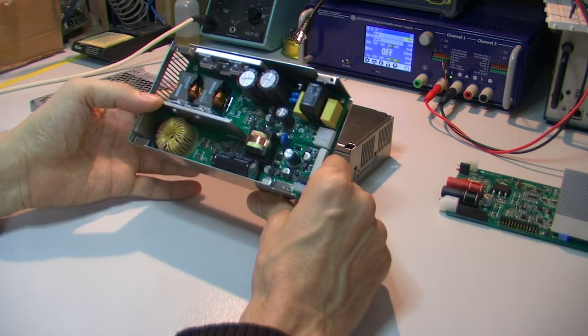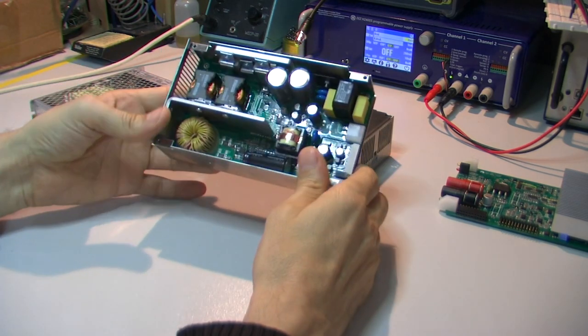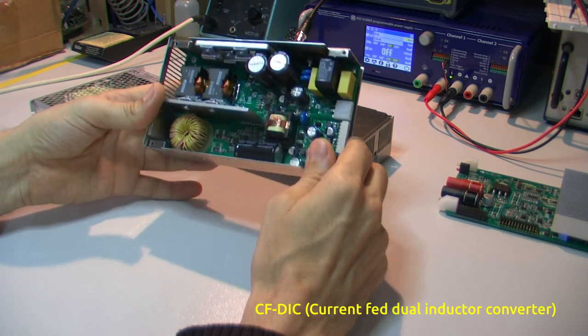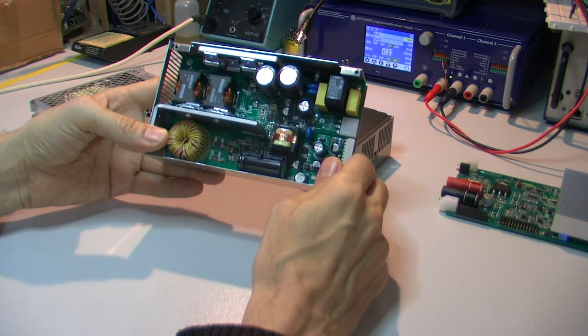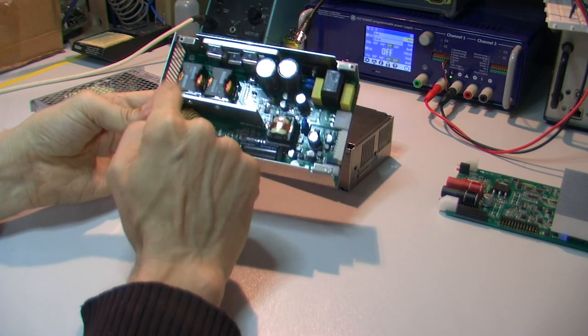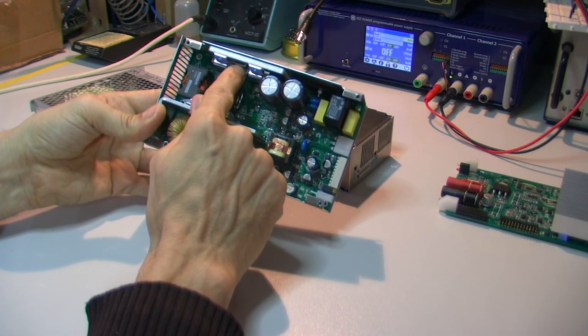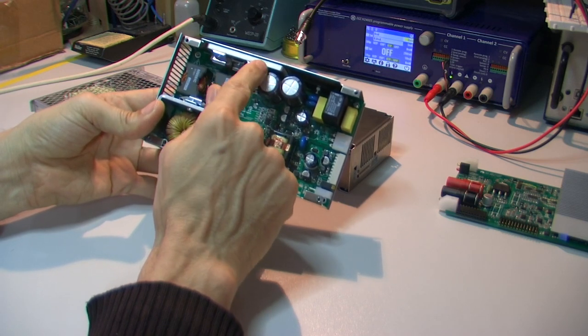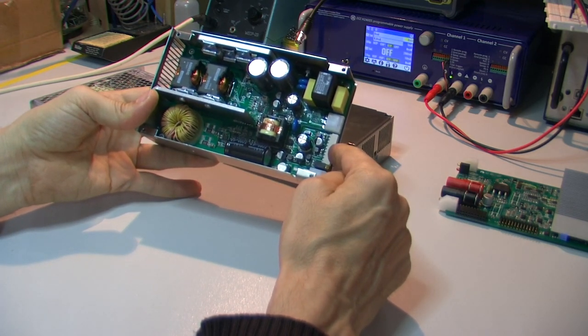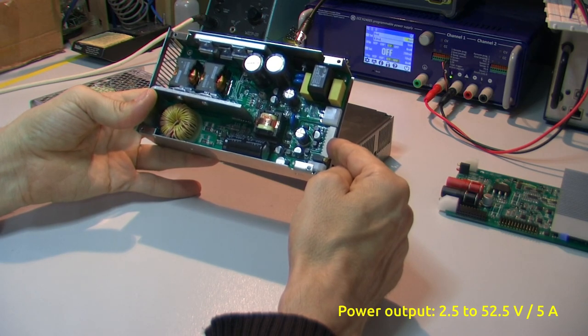Something what's interesting here is the chosen topology which is a current fed dual inductor converter with sync section and it also uses a high voltage synchronous buck to provide variable output which could be from 2.5 to 52.5 volts up to 5 amps.